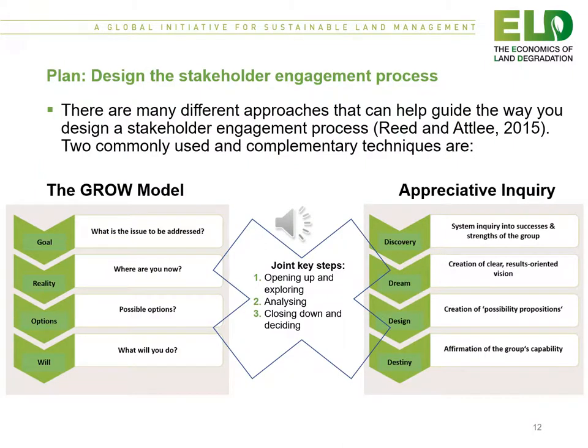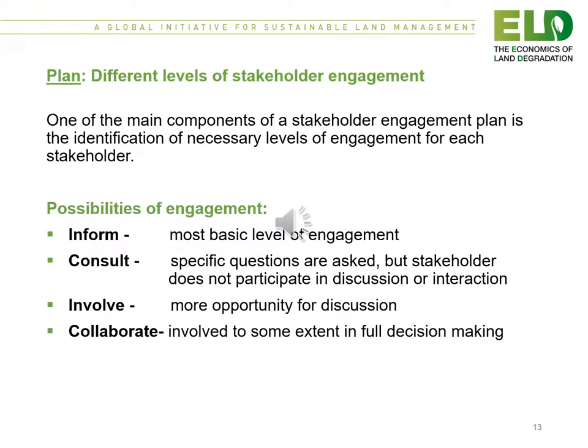There are many different approaches that can help guide the design of the process. Two commonly used and complementary techniques are shown in the slide, and more information is found in the practitioner's guide. One key component of a stakeholder engagement plan is identifying the necessary levels of engagement for each stakeholder. There are four possibilities: one, inform — the most basic level; two, consult — specific questions asked without discussion; three, involve — more opportunities for discussion; and four, collaborate — all stakeholders involved in full decision-making.